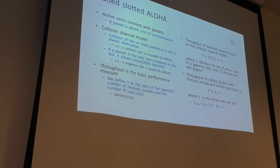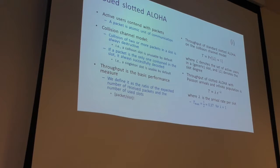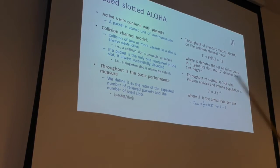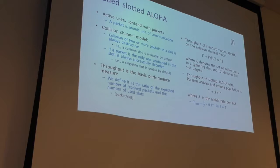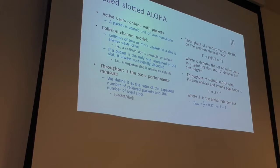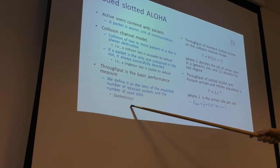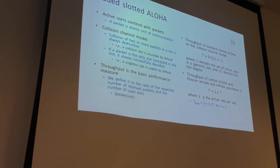A collision slot is unusable by default; a singleton slot is usable by default. The basic performance measure here is throughput — the expected number of received packets divided by the number of used slots. We dedicate a certain number of slots for the random access algorithm and measure how many were actually meaningful in terms of something being decoded.